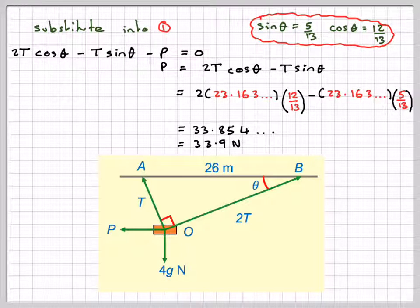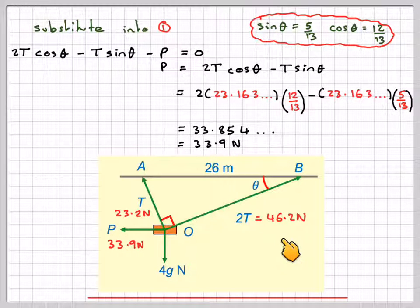So drawing a diagram, this P will be 33.9 Newtons, this one will be 23.2, and this one will have to be twice it, 46.3. This is only approximate.